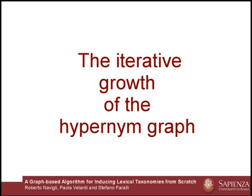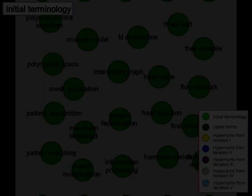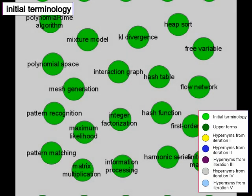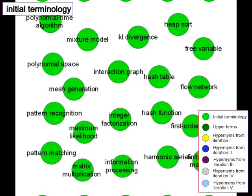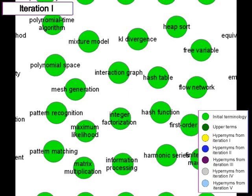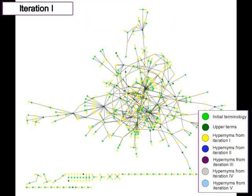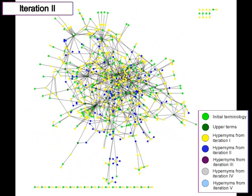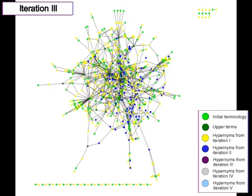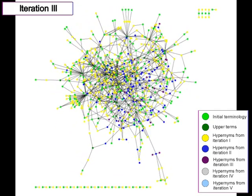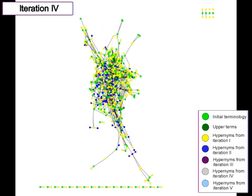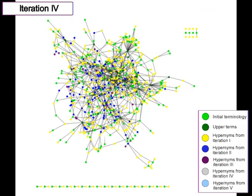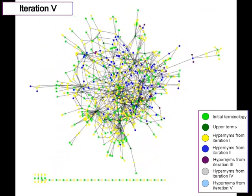Here we show a brief animation of the iterative growth of the hyponym graph. We start from the initial terminology. At the first iteration, both the extracted domain hyponyms and ISA relationships for the initial terms are added to the graph. At each subsequent iteration, new hyponyms for previously added nodes not in the set of upper terms, and the corresponding ISA relationships, are also added to the graph. The process ends when a given number of iterations is reached.